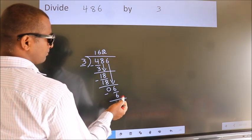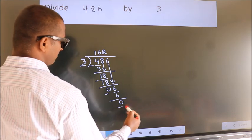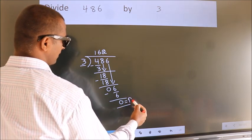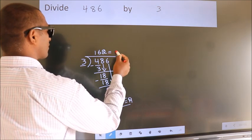No more numbers to bring it down. So we stop here. This is our remainder. This is our quotient.